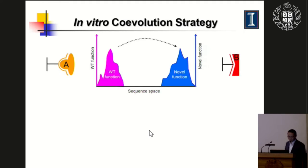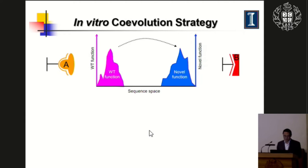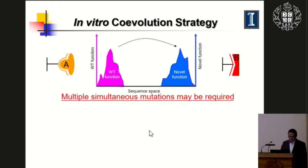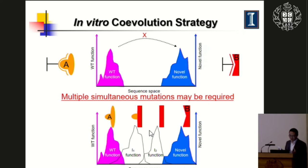More than 10 years ago, we developed a strategy called an in vitro co-evolution strategy — basically co-evolving the enzyme with the substrate to create a new function. In sequence space, the wild-type protein function and the novel protein function are separated far away. Our idea is to create some intermediate function as a bridge — create protein variants that work for the intermediate function, and then gradually reach the target novel function.